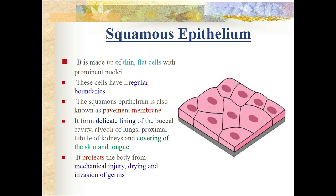Squamous epithelium is made up of thin flat cells with prominent nuclei and irregular boundaries. It is also known as pavement membrane because it forms a single flat layer like a thin membrane. It forms a delicate lining of the buccal cavity, alveoli of the lungs - the small sac-like structures where gas exchange takes place - and the bronchioles.